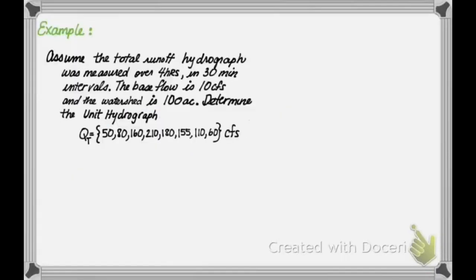So let's do an example to illustrate how to use proportionality. Assume the total runoff hydrograph we measured over 4 hours is 30 minutes. The base flow is 4 hours, and it has 30 minute intervals. The base flow is 10 minutes.